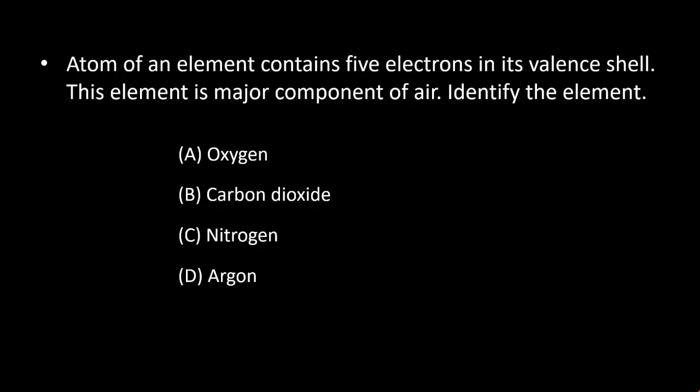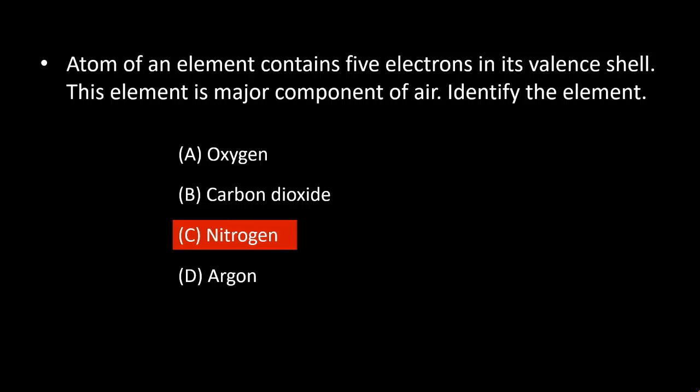The first question is: an atom of an element contains 5 electrons in its valence shell, and this element is a major component of air. Identify the element. Nitrogen has the atomic number 7 and contains 5 electrons in its valence shell. This element is a major component of air. Therefore, option C, nitrogen, is the right answer.